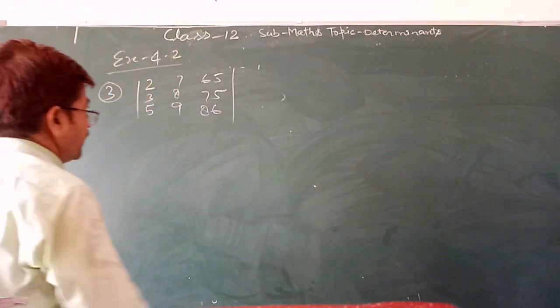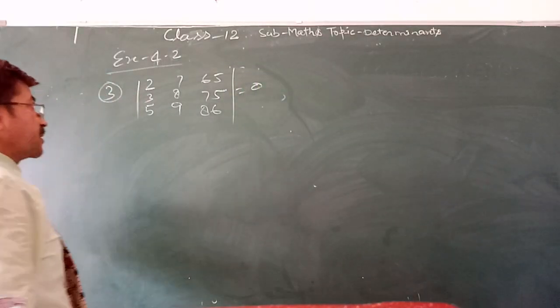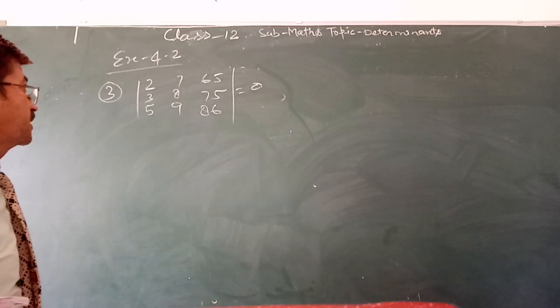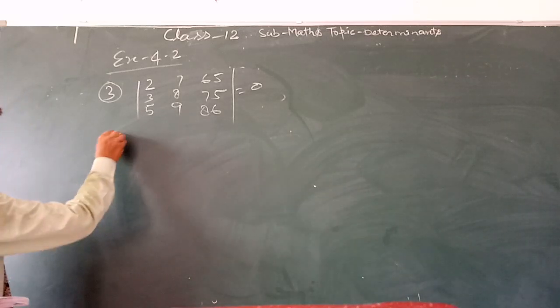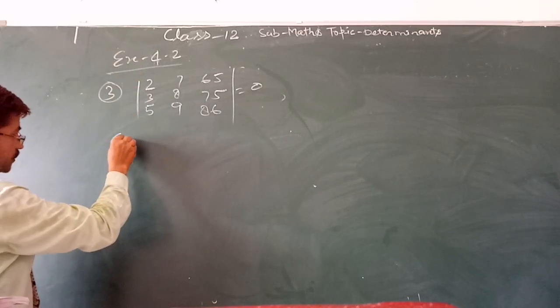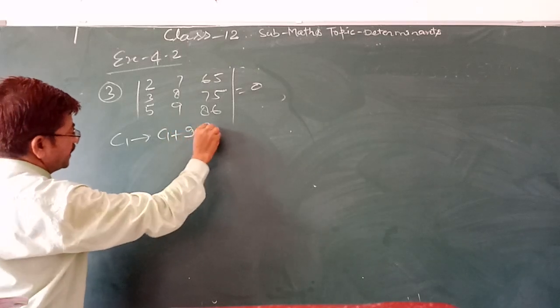Given the segment is equal to C1. So we operate C1 plus 9 times C1. And again in place of C1, C1 is equal to C1 plus 9 times C3.